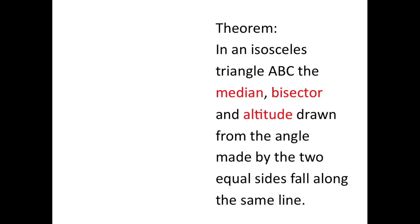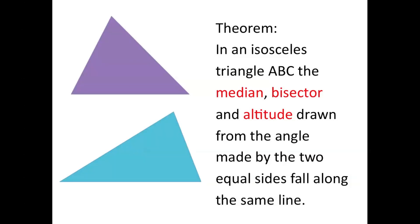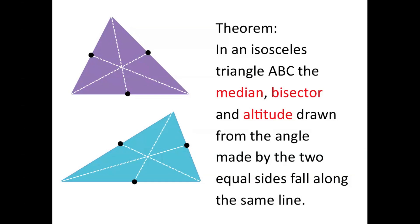First, what is the median? Let's take these two triangles. To find the median of both triangles, you first need to find the midpoint of each side — these dots represent where the midpoints are. The median is the line drawn from each vertex to the opposite side's midpoint. These three lines represent the medians of the purple triangle, and the same applies to the blue triangle.